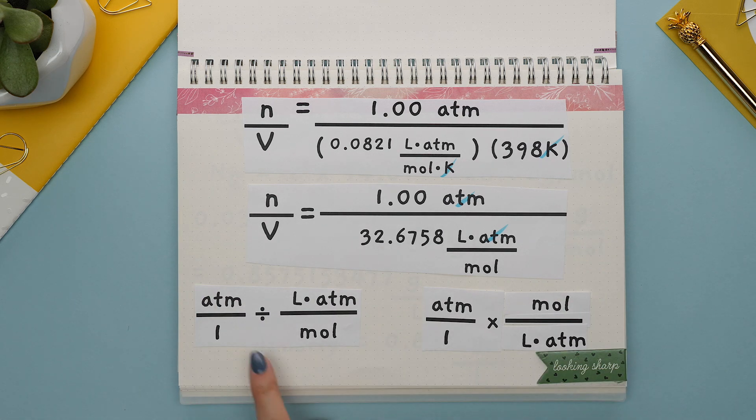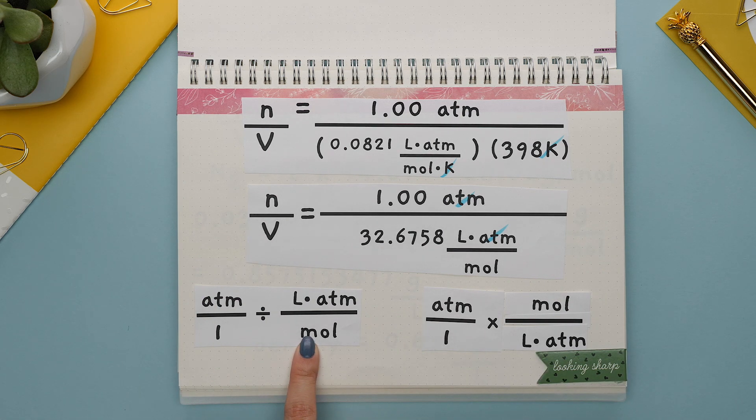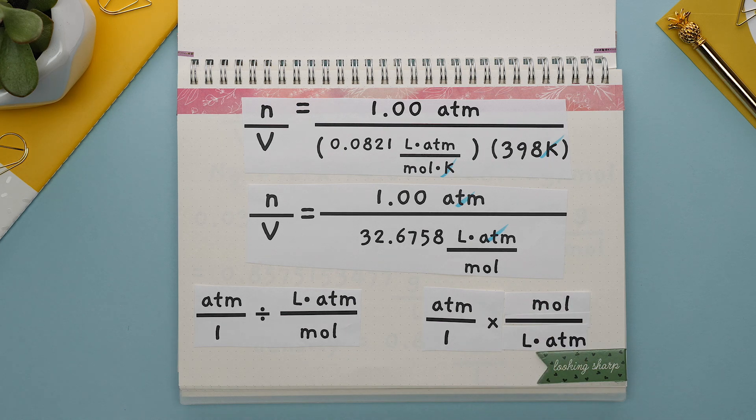You could also think of this as two fractions being divided and we multiply by the reciprocal of the second fraction to get these new units. Almost done.